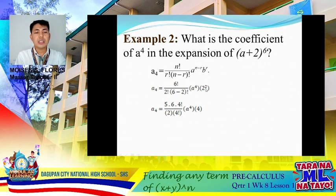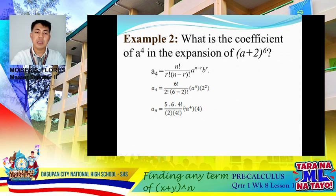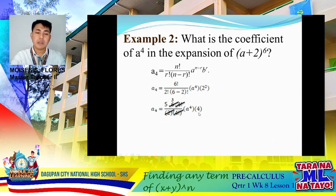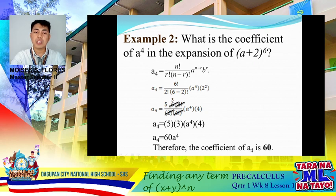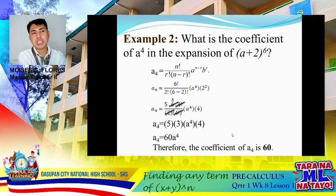So we have 6 factorial over 2 factorial times 4 factorial, times a raised to 4, times 2 squared. Simplifying: 6 factorial is 6 times 5 times 4 factorial — we cancel out 4 factorial. Then we can cancel 2 with 6, leaving 3, so 5 times 3 is 15, times 4 is 60. Therefore, the coefficient of a raised to 4 is 60.